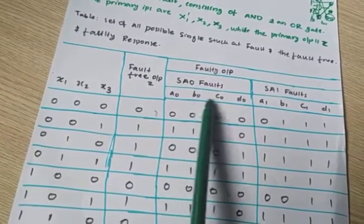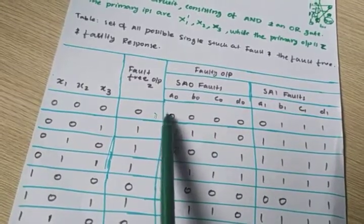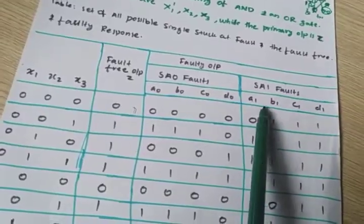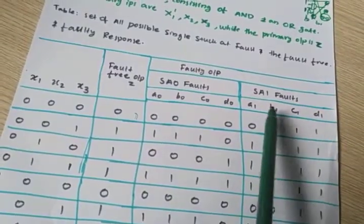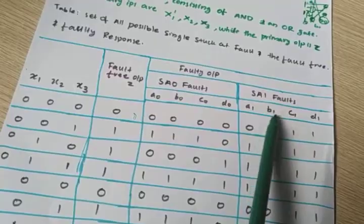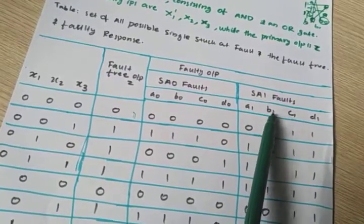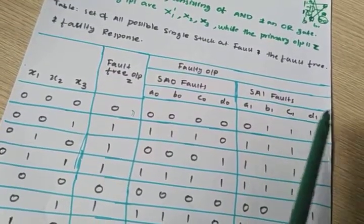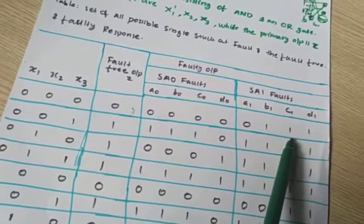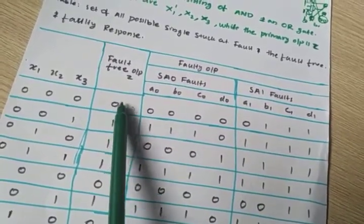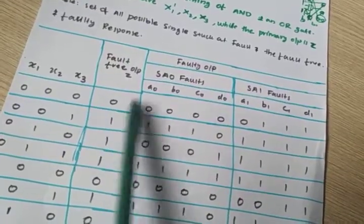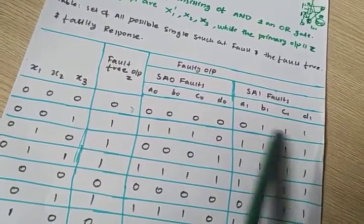Again, if we put a fault — for the case where output fault is 1 — no problem. But in these 3 cases, if the fault is stuck-at-1 at B1, C1, D1, we get a faulty output. Why? Because the output is 1, but we expected 0, so it is a faulty output.